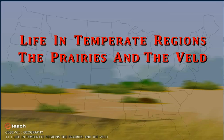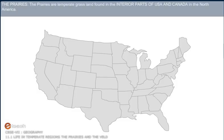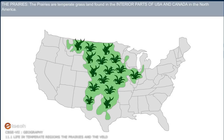In temperate regions, we shall learn about two temperate grasslands: the prairies and the veld. The prairies are temperate grasslands found in the interior parts of the USA and Canada in North America.